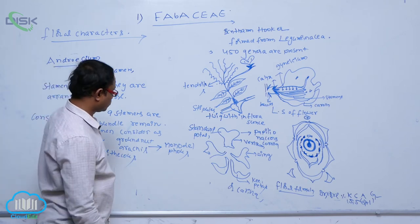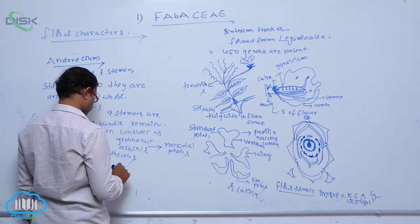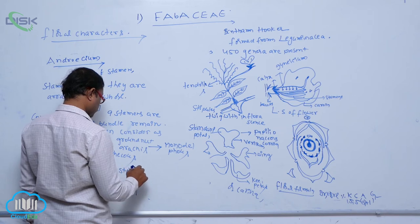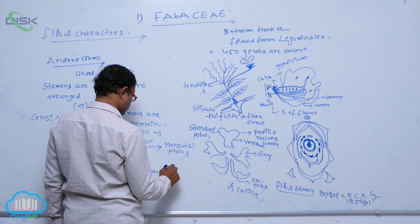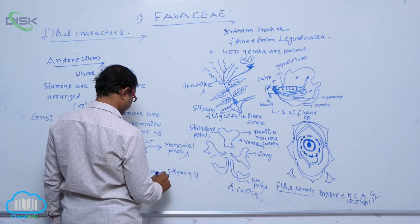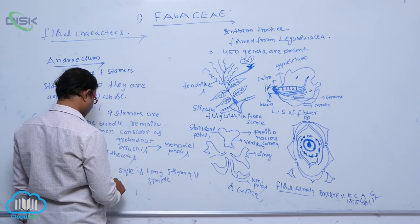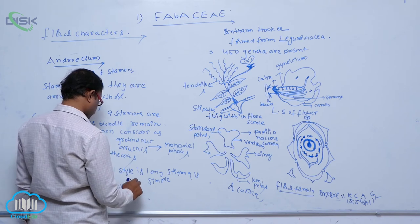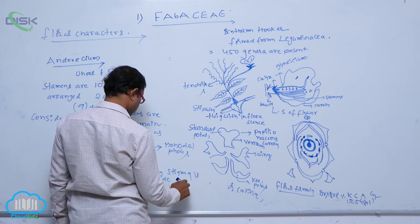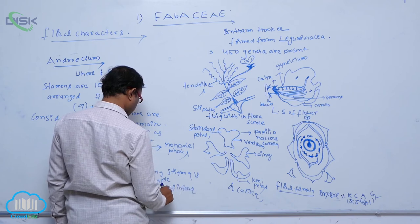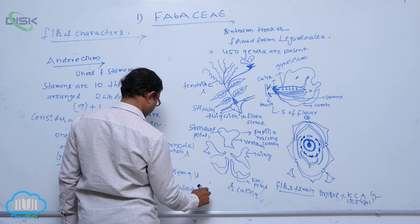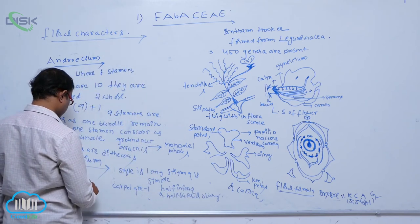After that, the gynoecium part. Style is long. Stigma is simple. Carpels are one. It is a half-inferior or half-superior ovary. Placentation is marginal placentation.